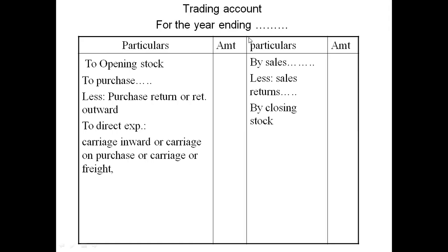Whenever we prepare a trading account, there are four basic things which you have to record. The very first thing is the opening stock — we start our business with some stock. Moving ahead, we will also purchase something. We may also return some of these goods, so the amount of purchases will be written in the inner column, and the amount of purchase return will also be written, with the total net amount in the outer column.